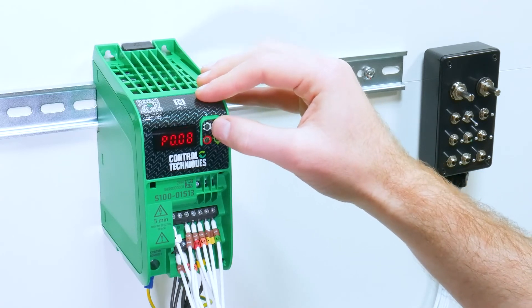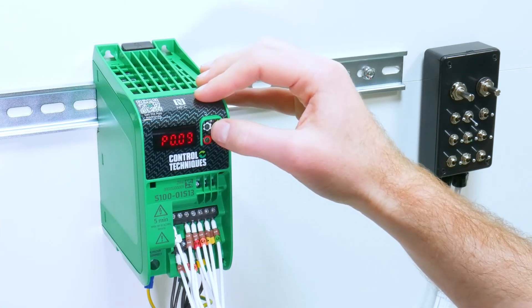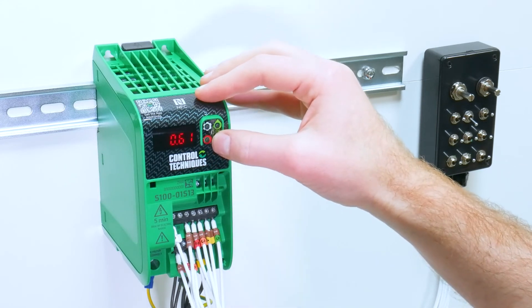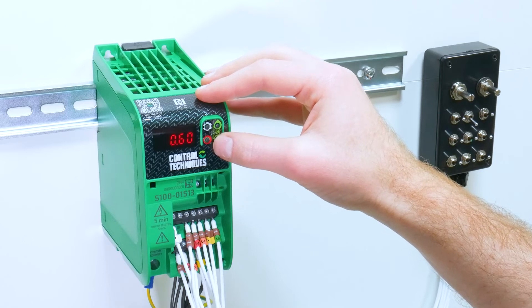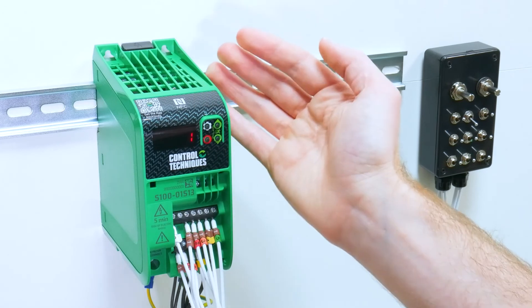Parameter eight is our motor rated voltage. Parameter nine is our motor rated power factor. Parameter ten is our run stop configuration, and a setting of one means enable run forward and reverse.